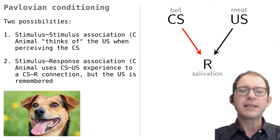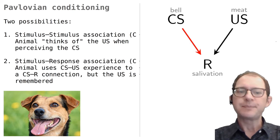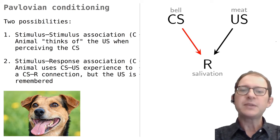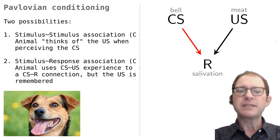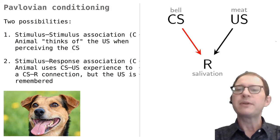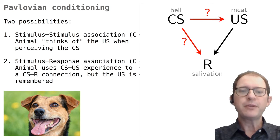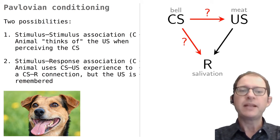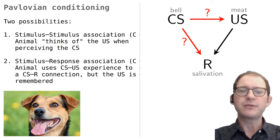He would just think that it's a good idea to salivate — something like: I hear the bell, it's time to salivate. The dog would need the CS-US experiences to learn this connection, but after the connection is formed, there would be no memory of the US. So in Pavlovian conditioning, the question of whether animals imagine what is going to happen translates into the question of what association is formed.